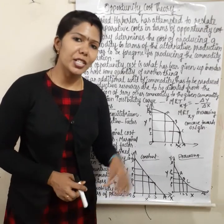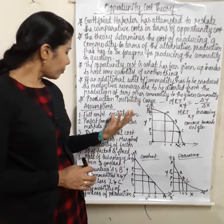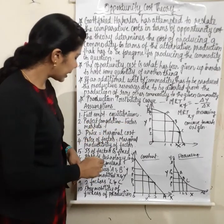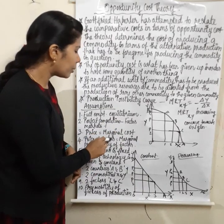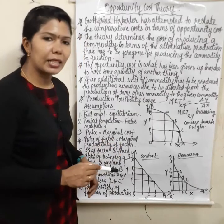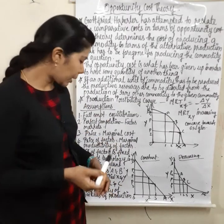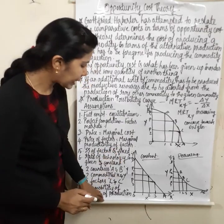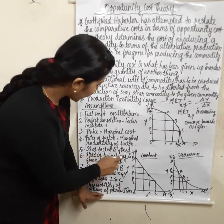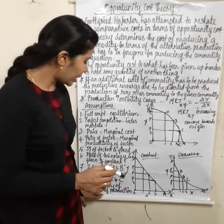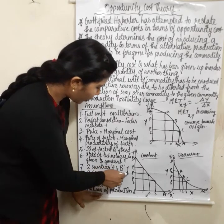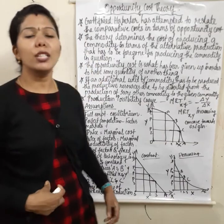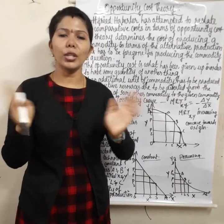The tenth assumption is free mobility of factors of production within the country, but factors are not mobile between countries. Supply of factors is fixed. State of technology is given and constant. Two countries, two commodities X and Y, two factors labor and capital. Free mobility of factors of production within each country.